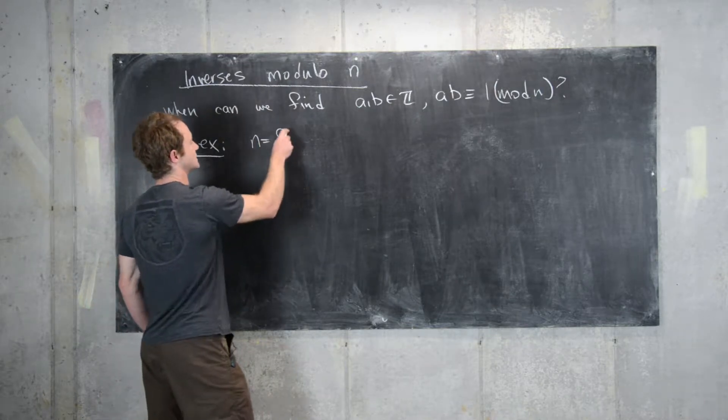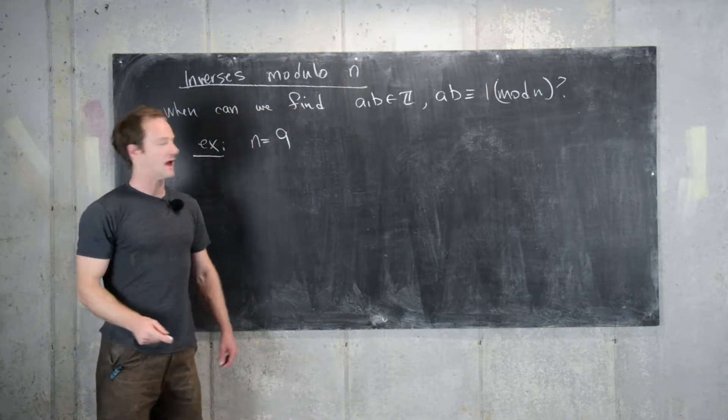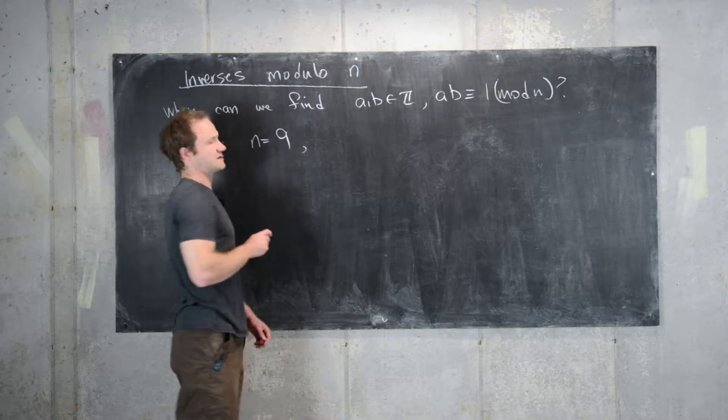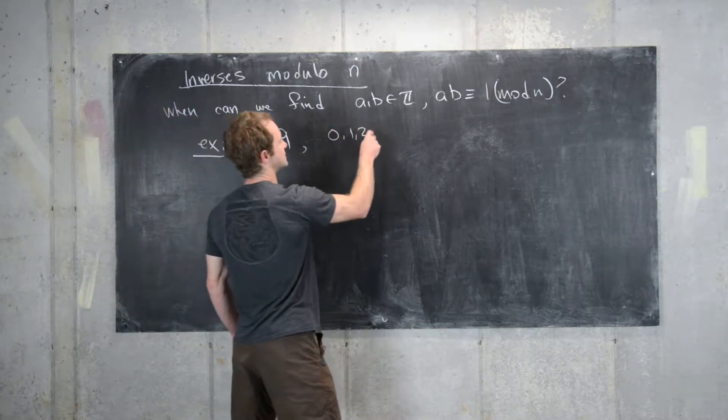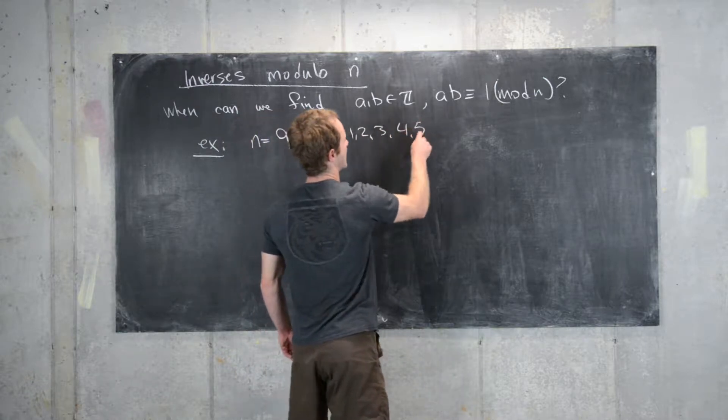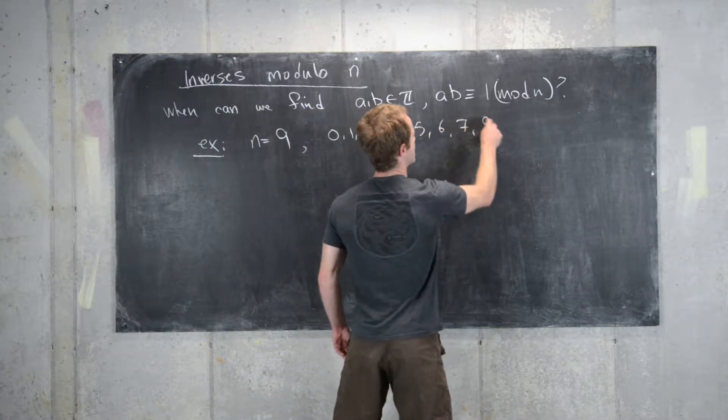So that's our goal. Let's look at an example as some motivation to get started. So let's say n equals 9. And that means we only need to really look at the numbers 0, 1, 2, 3, 4, 5, 6, 7, and 8.